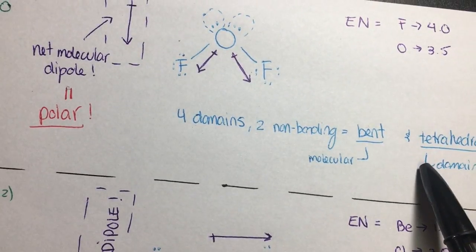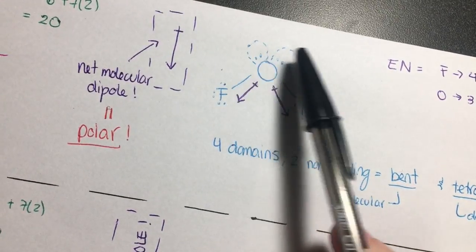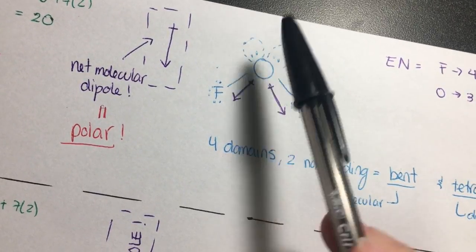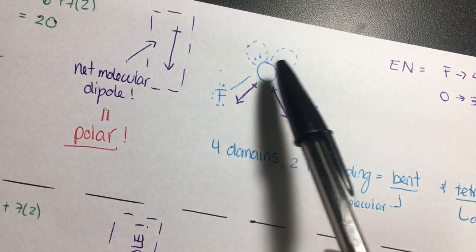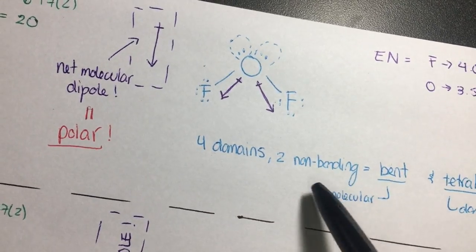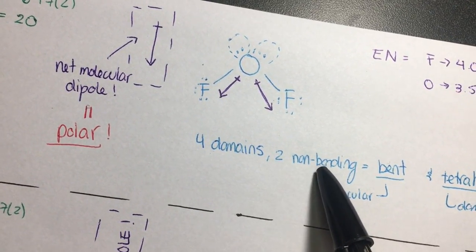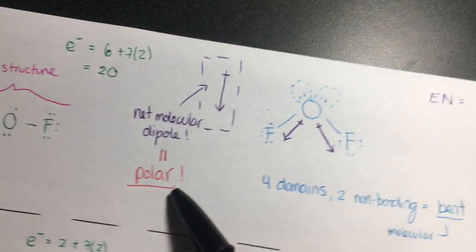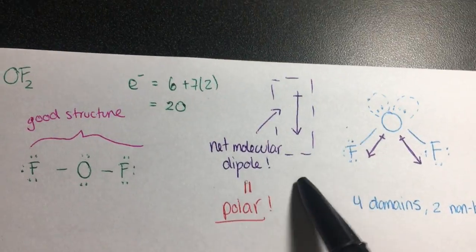It's important to know that if this molecule had all four domains the same, it wouldn't be polar because the dipoles would cancel each other. But since we have two domains that are different, we have a polar molecule as a result. So we know that OF₂ is polar.